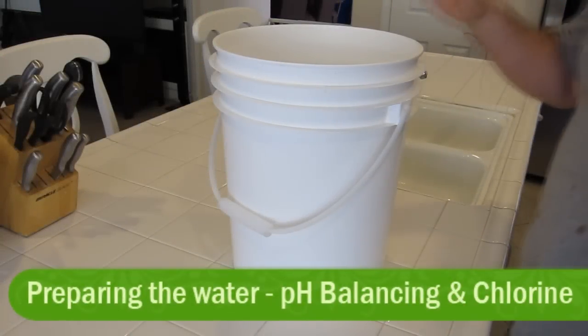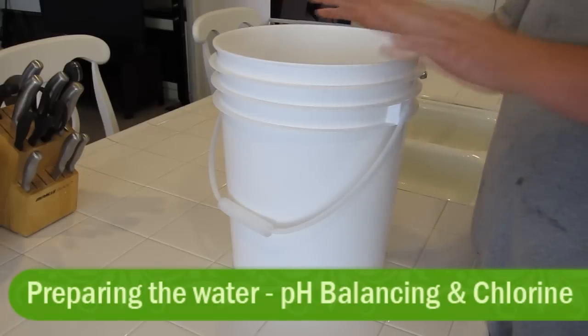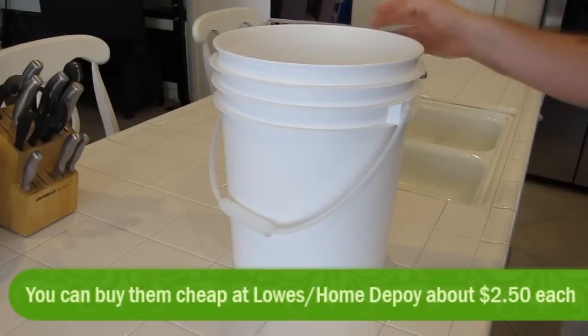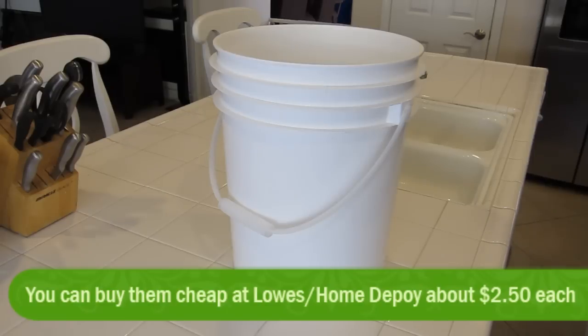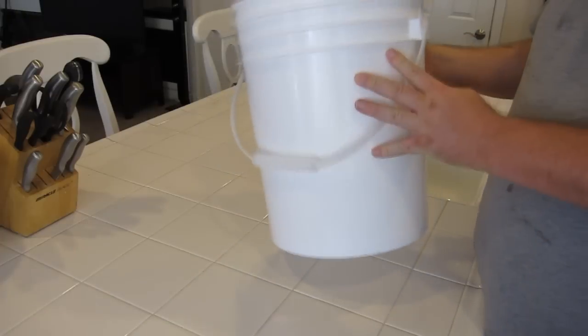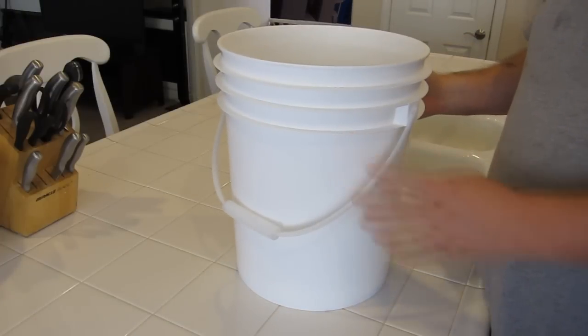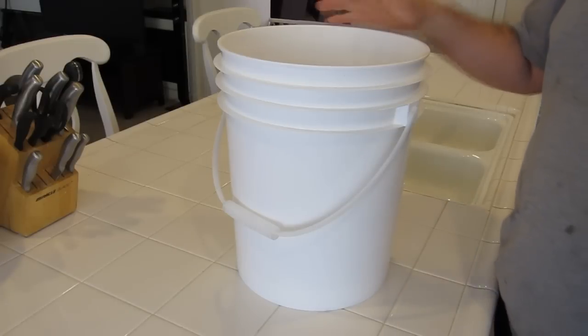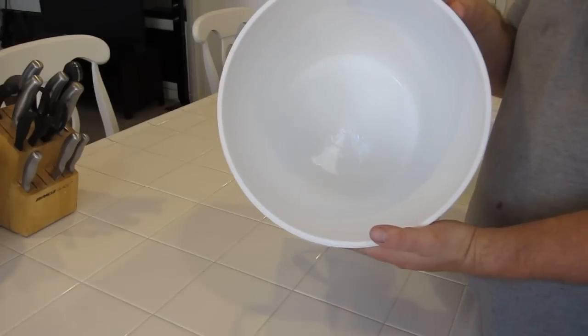First thing we're going to do is take one of our five-gallon buckets. We got one from Ralph's—these are the buckets they use for the icing from the bakery, so you can pick them up there for free. Make sure you clean them out and give them a good scrub down before you use them because there's a lot of sugar in there we don't want to get into our system.